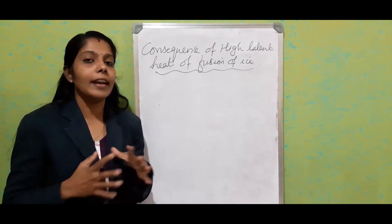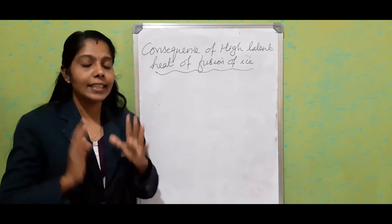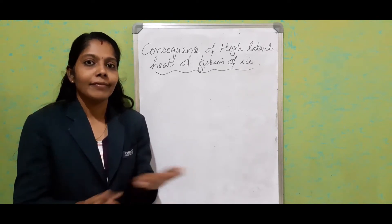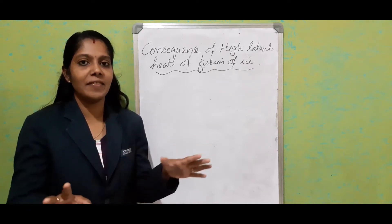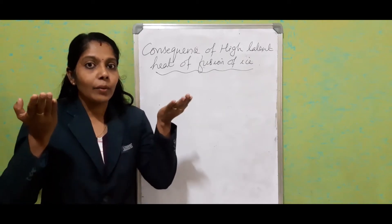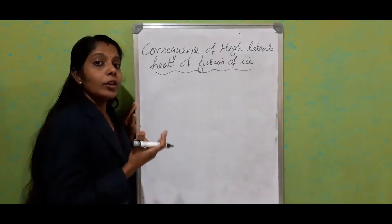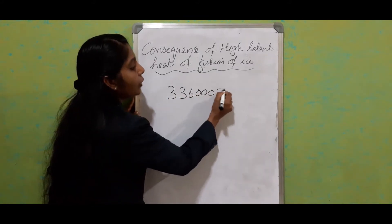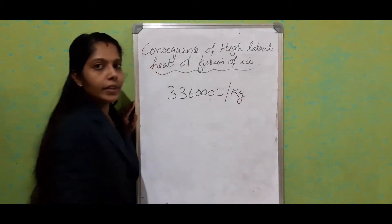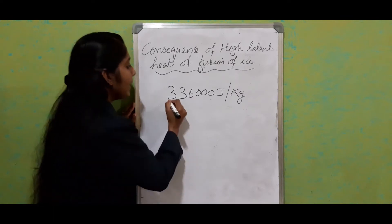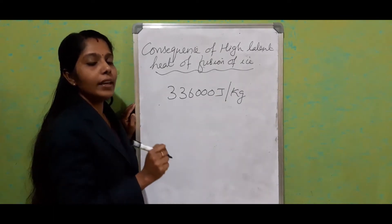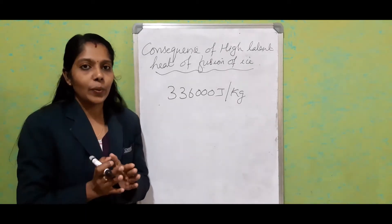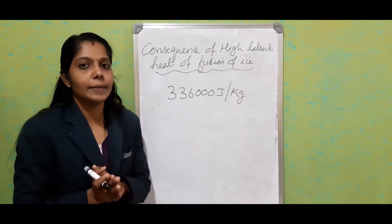The snow of the mountains never melts all at once. Just imagine if the entire snow of the world started melting at once — from Antarctica, Africa, everywhere — the water level would raise up. But it never happens because the high specific latent heat of ice is 336,000 joules per kilogram. To melt one kilogram of ice, it has to absorb 336,000 joules from sunlight, so this process happens very slowly and the entire snow never melts at once.